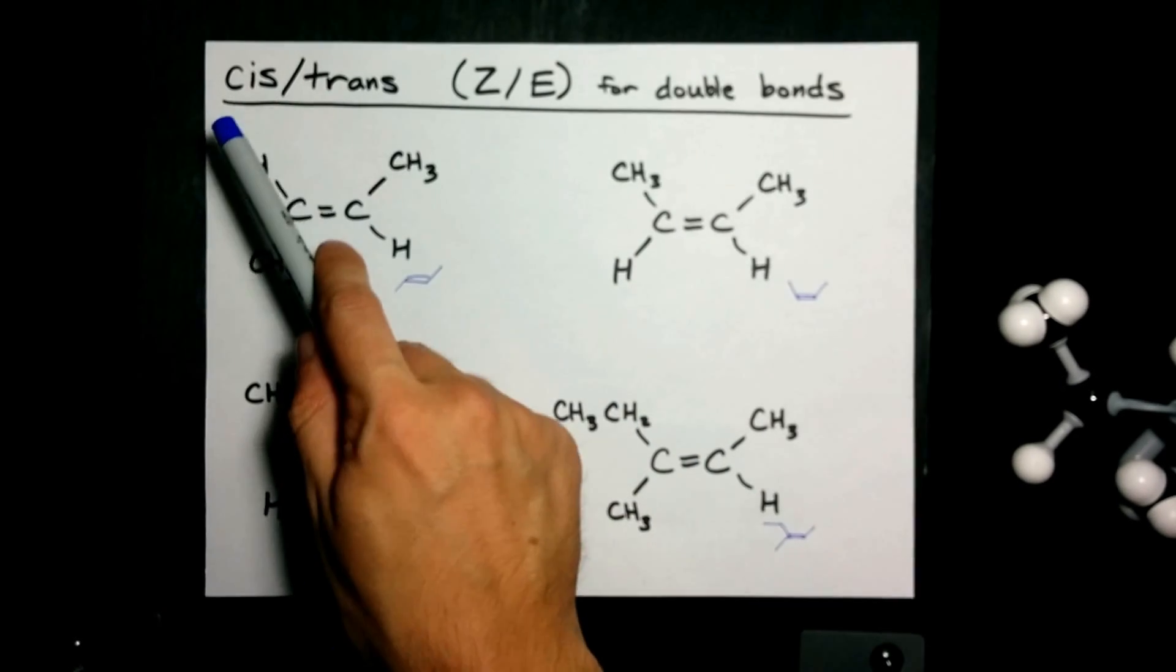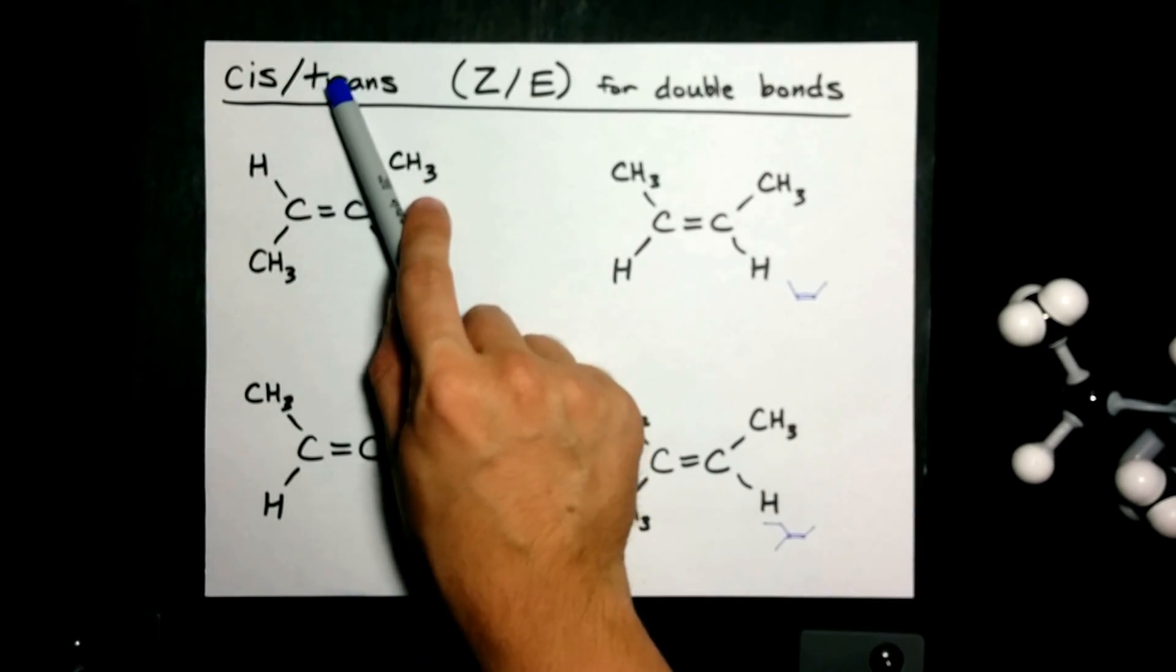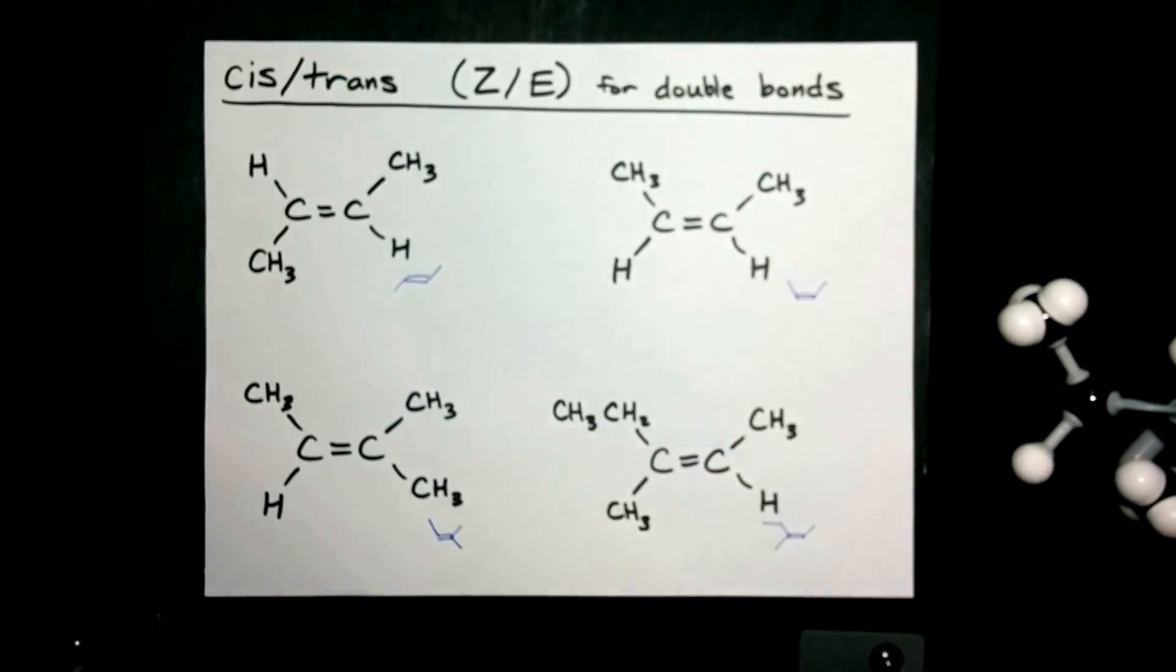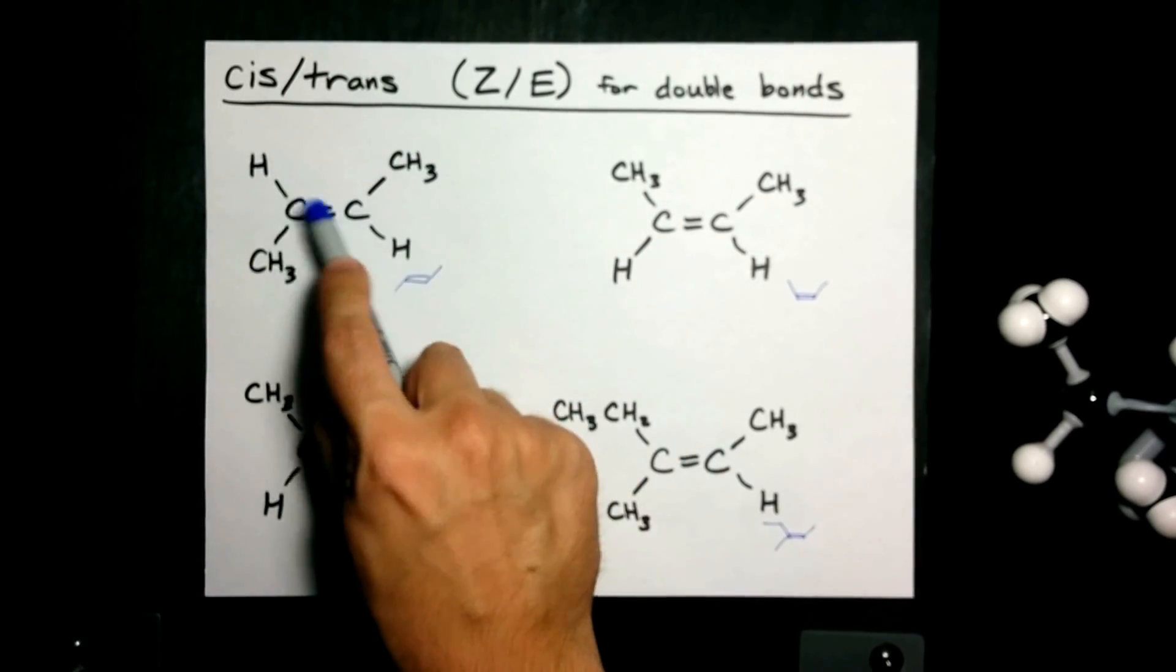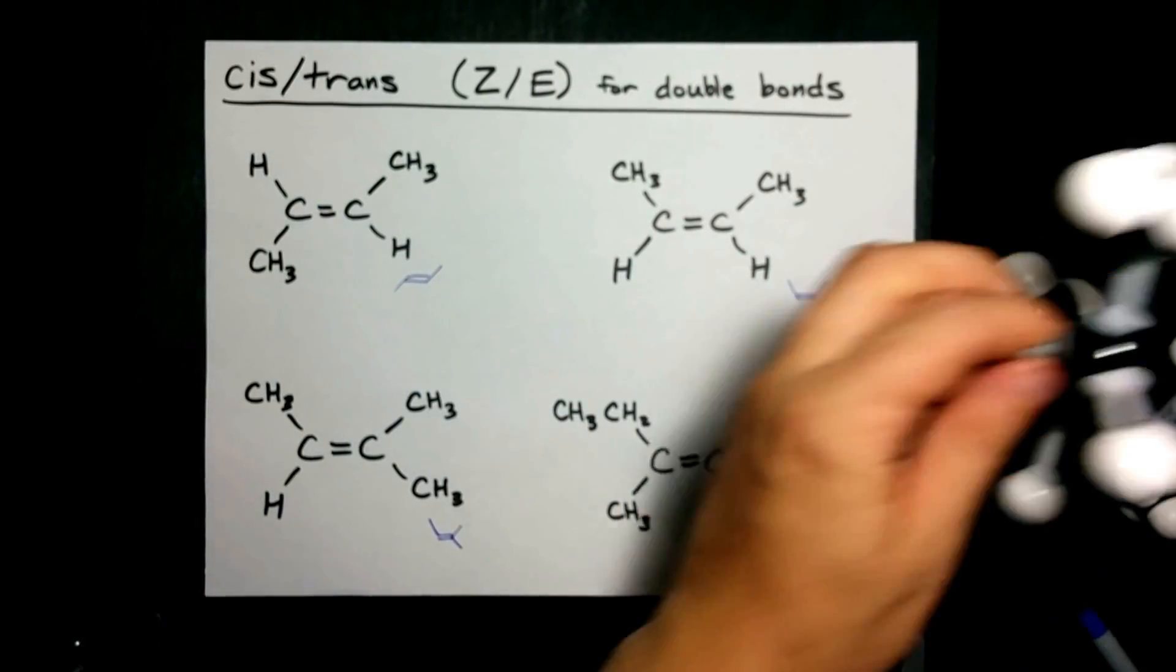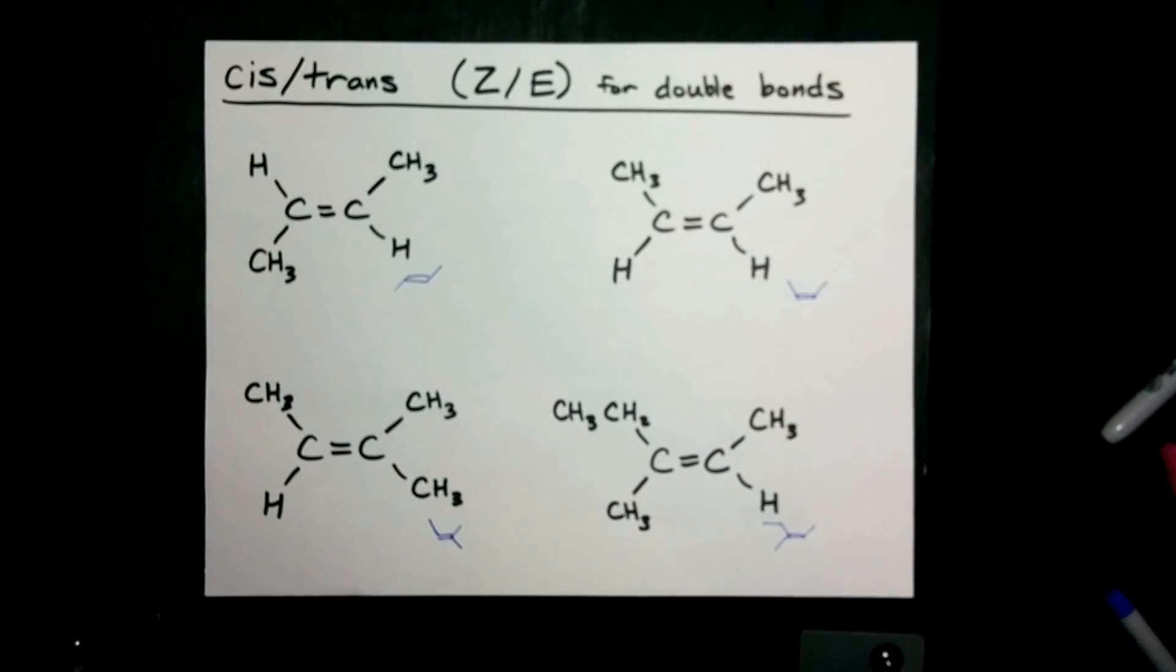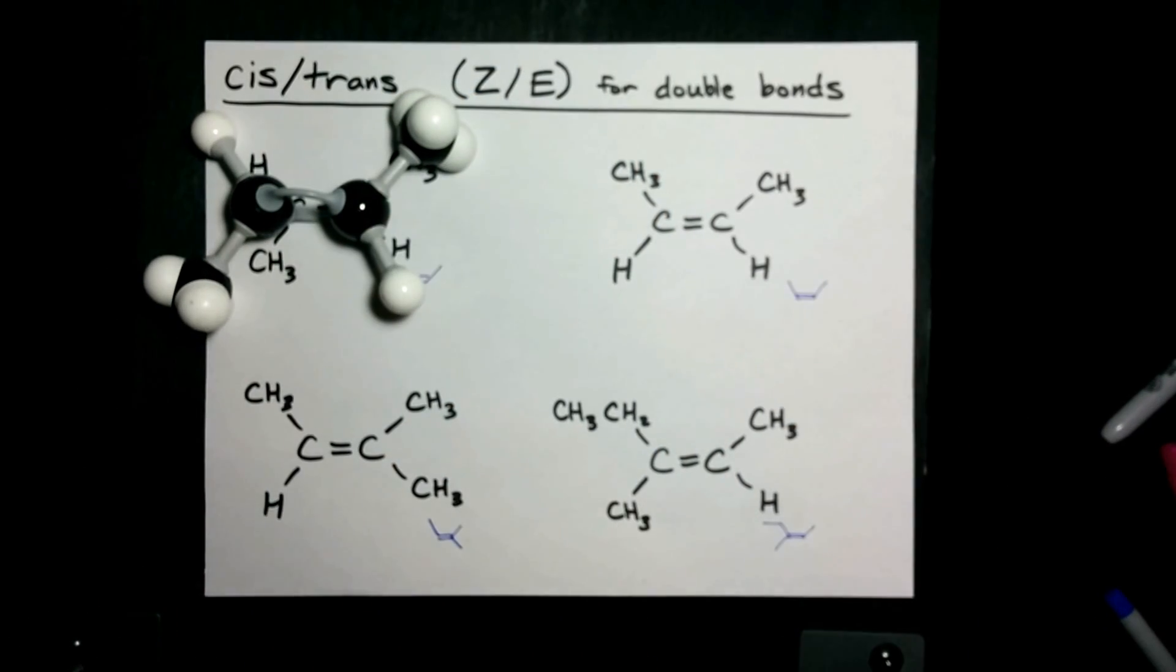All right, let's take some time and talk about cis-trans isomers of double bonds. Here we have a four-carbon long chain with a double bond in the center. And I've made a molecular model for this, just like that one.